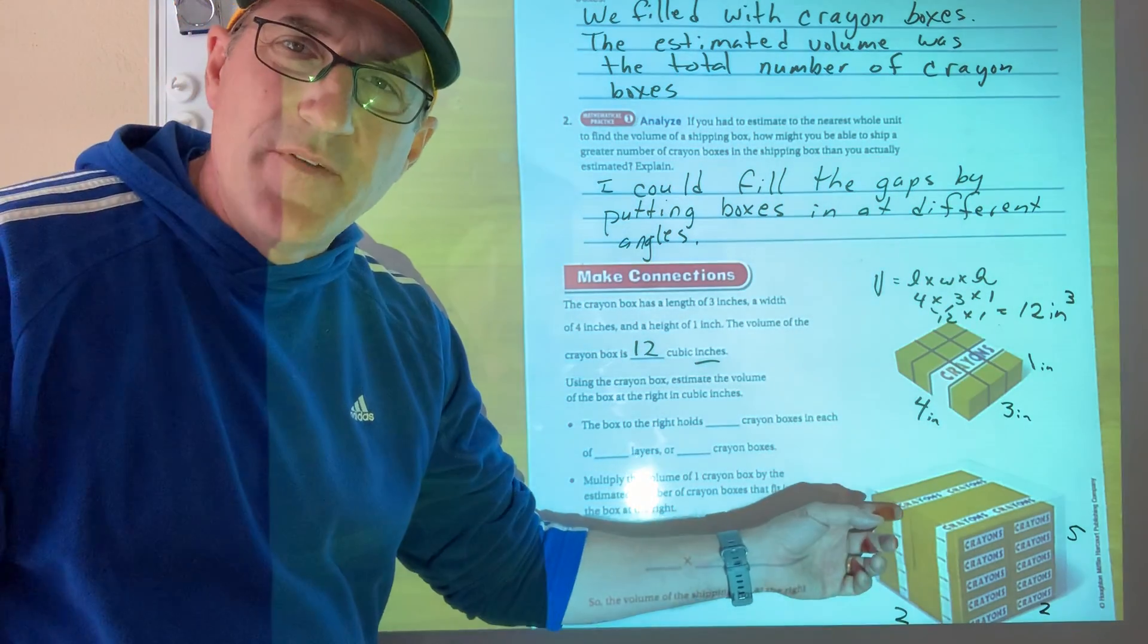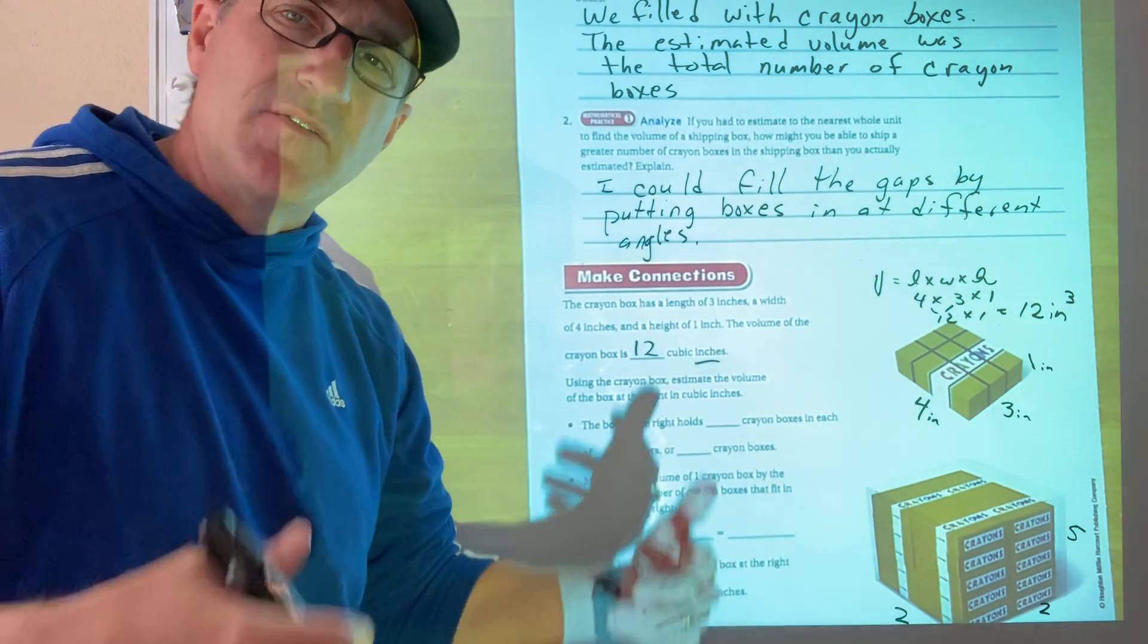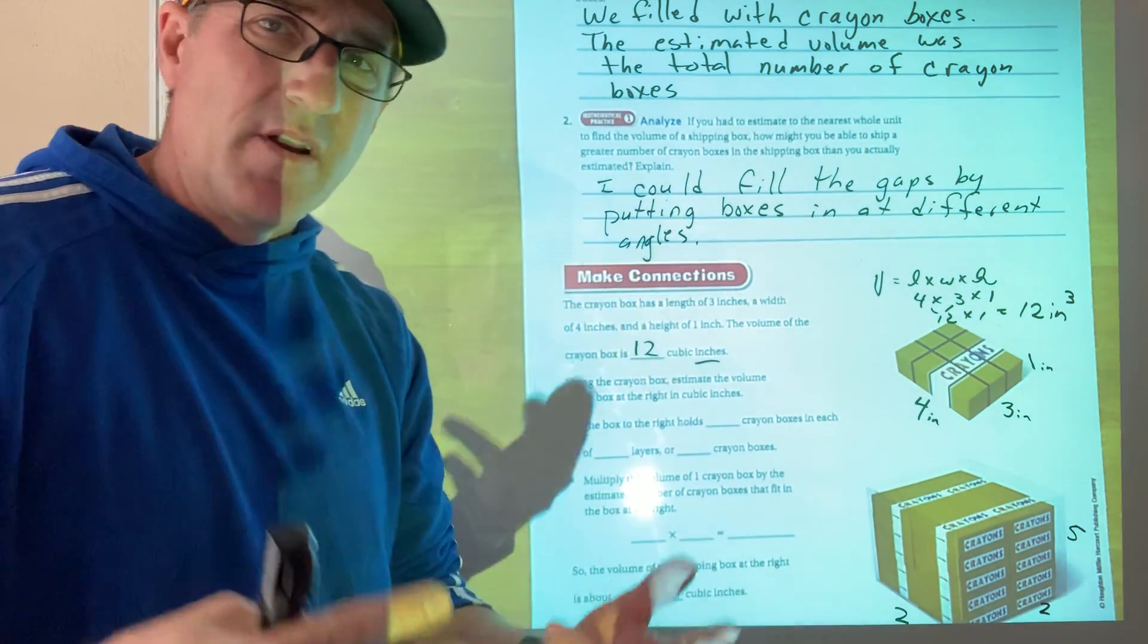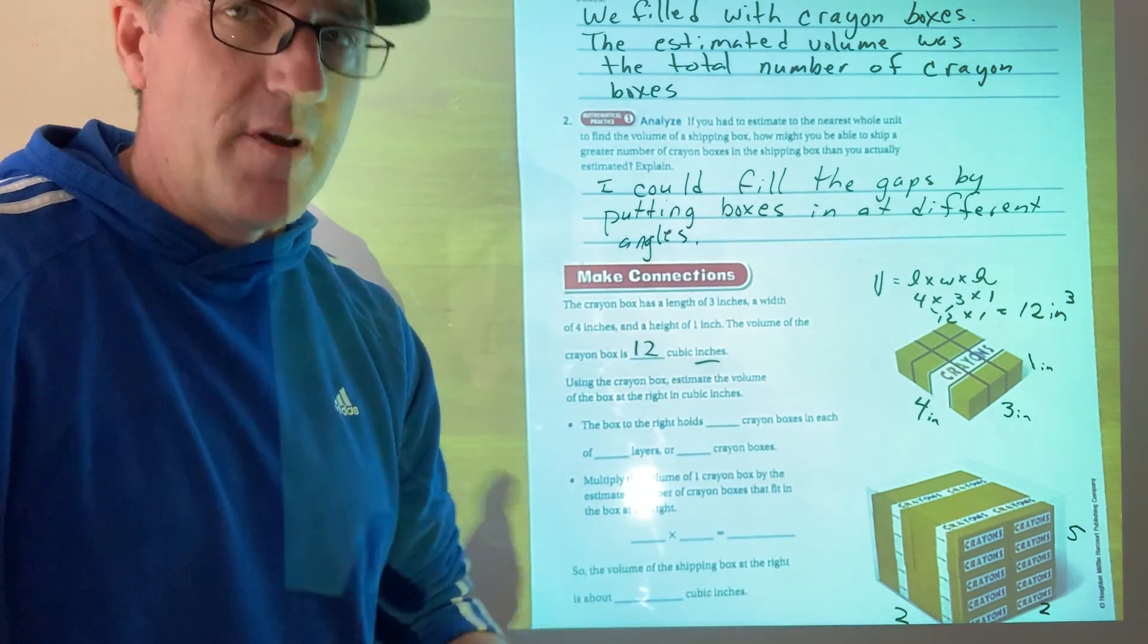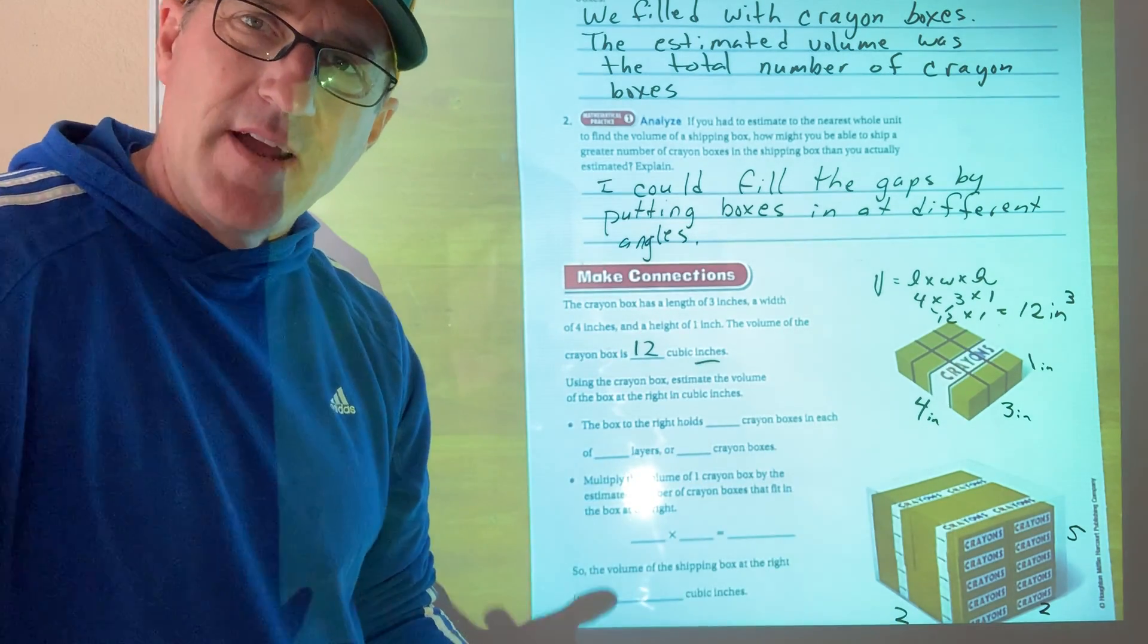And so if I could only fit one cram box in the box, my estimate would be 12. If I could fit two, it would be 24. If I could fit four, it would be 48, et cetera. That's how I estimate.